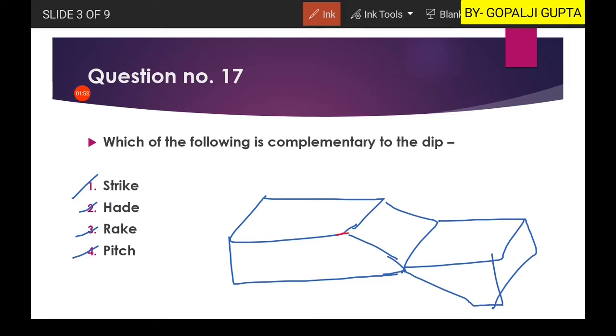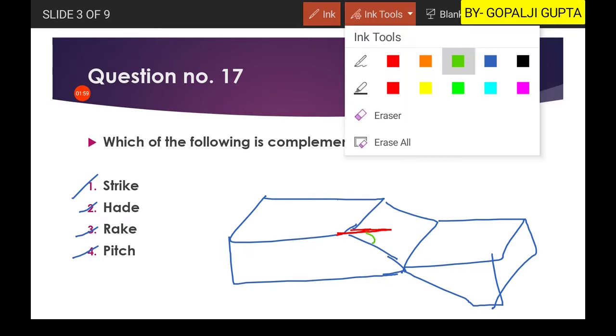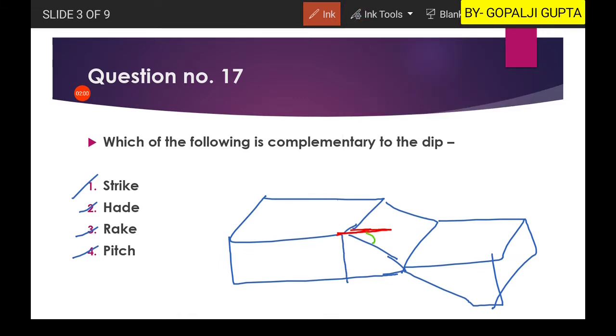Now this is the horizontal surface and this is the angle what you know as the dip, and this angle is known as your head, H-A-D-E, and this is known as the complementary to the dip. So we can define that head is the angle between the fault plane and a vertical plane, while dip is the angle between the fault plane to the horizontal plane.